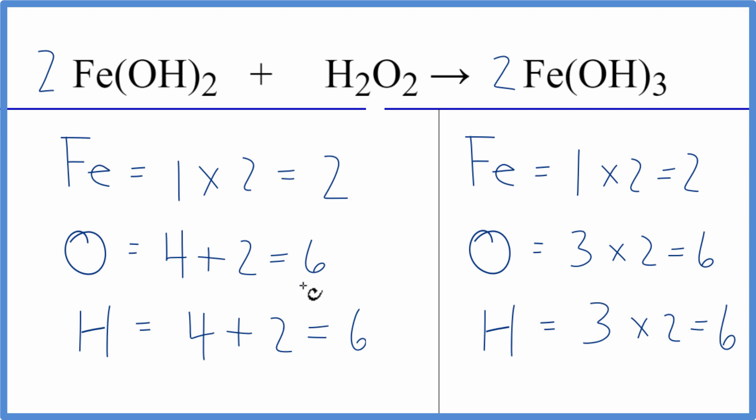This equation is balanced. So the key to balancing this equation is if you have odd numbers, get those to be even, and that will usually help balance the equation. This is Dr. B with the balanced equation for Fe(OH)₂ plus H₂O₂. Thanks for watching.